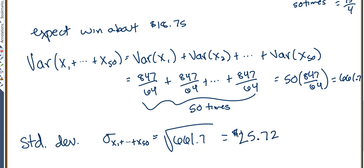So if you play 50 times, you can expect to win about $18.75, but you have a standard deviation of about $25, which means your actual winnings could be quite a bit higher or lower than that $18.75.